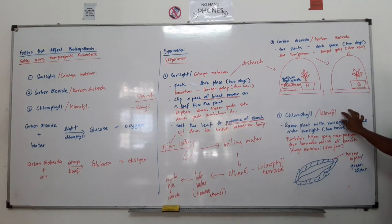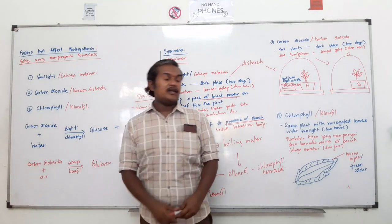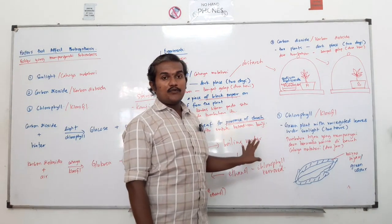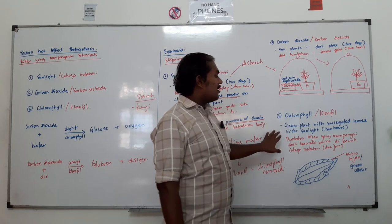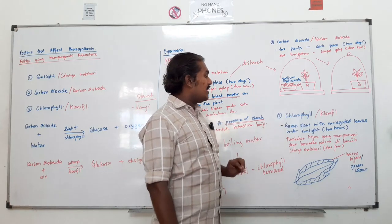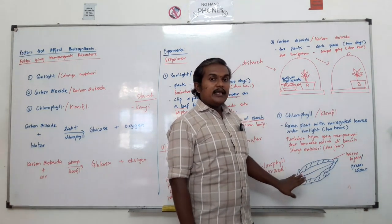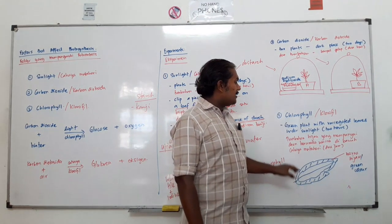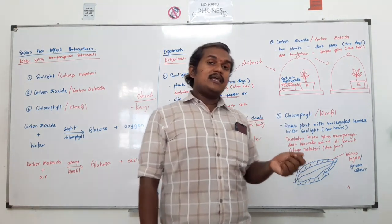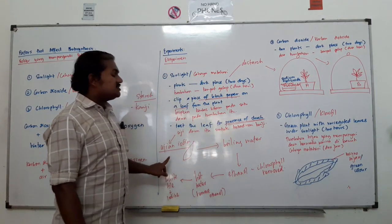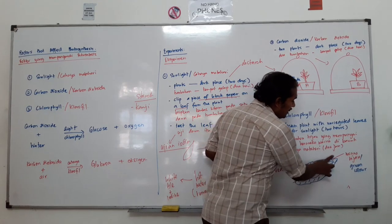Untuk eksperimen yang ketiga — eksperimen yang paling senang — kita nak buktikan bahawa chlorophyll adalah penting. Tanpa chlorophyll, tumbuhan tidak dapat menyerap cahaya matahari. Tumbuhan yang kita pilih untuk eksperimen ini adalah tumbuhan yang mempunyai daun beraneka warna. Di Malaysia, kamu boleh nampak daun yang mempunyai warna hijau di tepi tetapi warna putih di bahagian tengah. Kita letakkan tumbuhan ini di bawah cahaya matahari, kemudian petik satu daun dan lakukan ujian iodine.